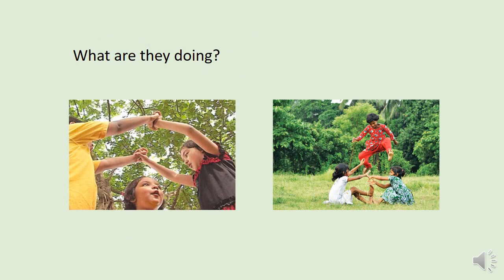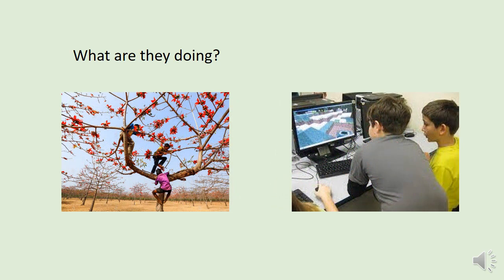Let's begin the class with some pictures. Look at the pictures. What are they doing? There are children in the picture and they are playing in the field. There are two more pictures on the slide. In the first picture, there are three boys and they are climbing a tree. And in the second picture, there are two boys and they are playing computer games. From these four pictures, we can assume that it is about the pastimes of children.